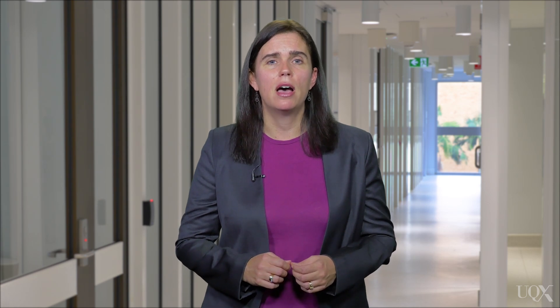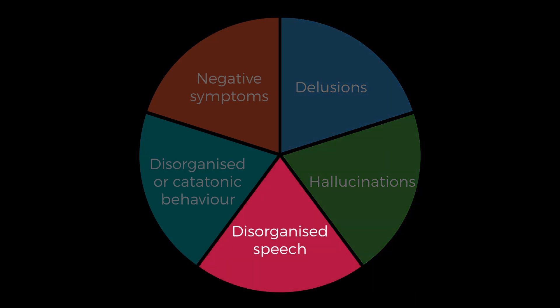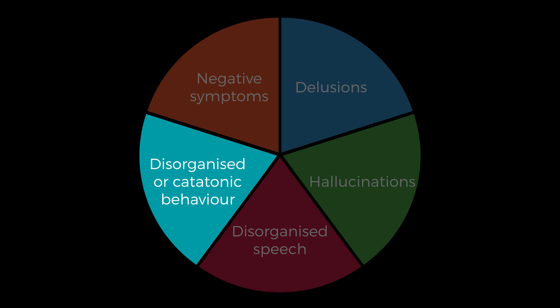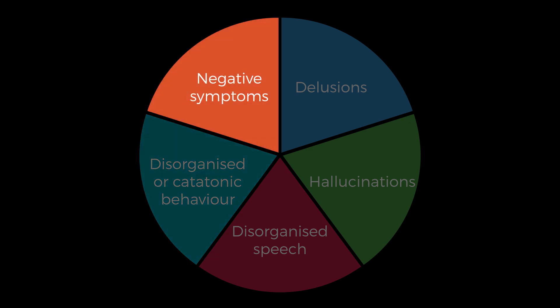The five main symptom sets are delusions, hallucinations, disorganised speech, grossly disorganised or catatonic behaviour, and negative symptoms. It isn't necessary for an individual to demonstrate all of these symptoms. To be diagnosed with schizophrenia, a person needs to show two or more symptoms.